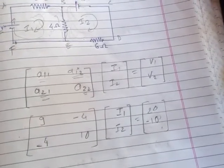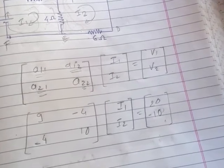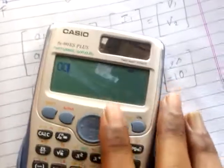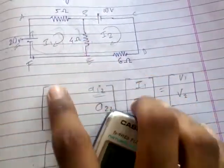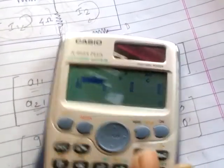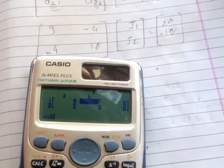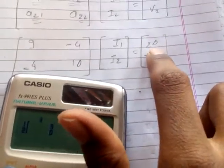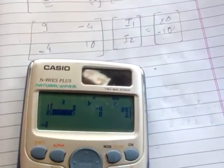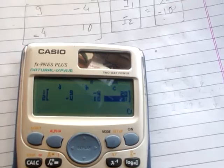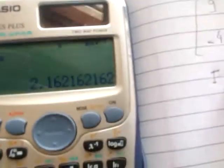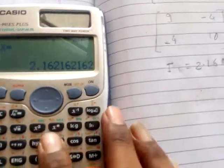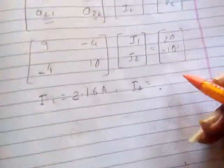That's it — you just put the values into your calculator. To access equations, press Mode then 5 (Equation). Since we have two loops, we use a square matrix of order 2 and select the first equation. Enter the values: 9, minus 4, and for C enter voltage 20; then minus 4, 10, and for C enter minus 10. You get I1 equals 2.16 amperes and I2 equals minus 0.13 amperes.